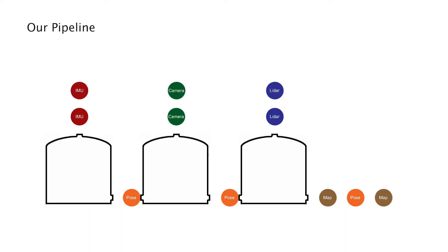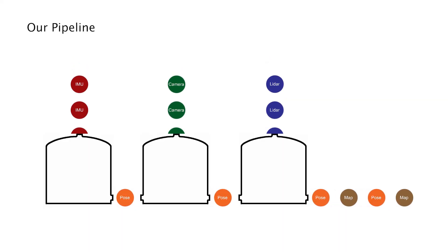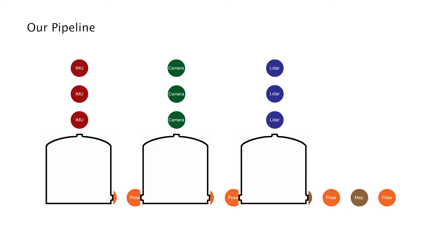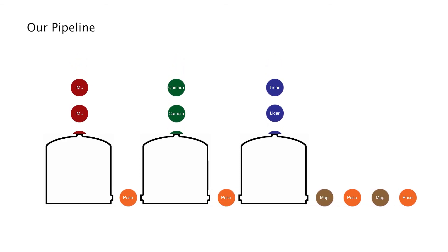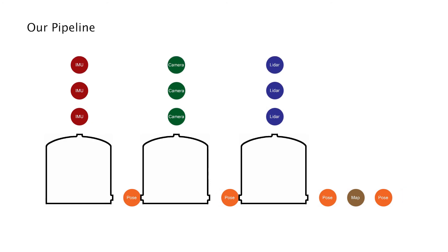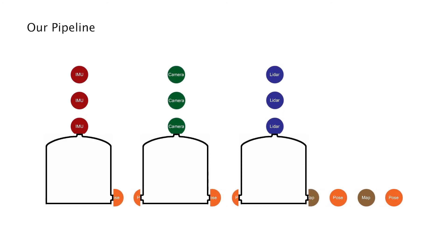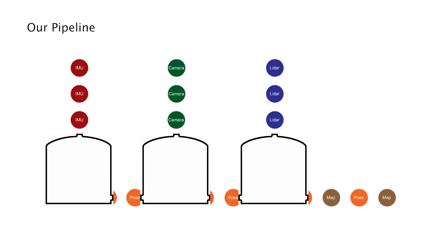Our approach has multiple layers of processing — you can think of it as a chemical plant. We take some data from some sensors and get an initial result. Then we add more data and process it one more time to get a better result. We do this again and again through all the layers.